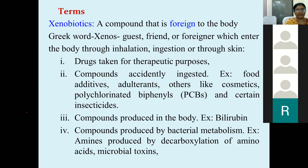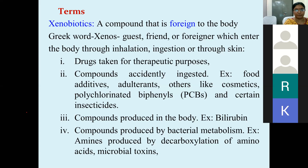Some compounds are produced in the body, like bilirubin, which is not foreign but has to be detoxified. Compounds produced by bacterial metabolism in the intestine — bacteria in the GI tract help synthesize some vitamins, producing side effects in the process. Compounds produced by decarboxylation in protein metabolism, where the amino group and carboxyl group are removed, are also considered foreign. Microbial toxins are similarly included.